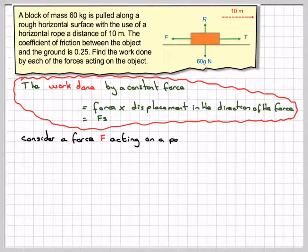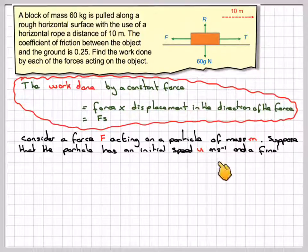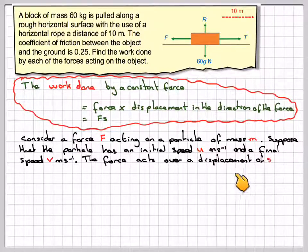Consider a force F acting on a particle of mass M. Suppose that the particle has an initial speed of U meters per second and a final speed of V meters per second. The force acts over a displacement of S meters, S being displacement.